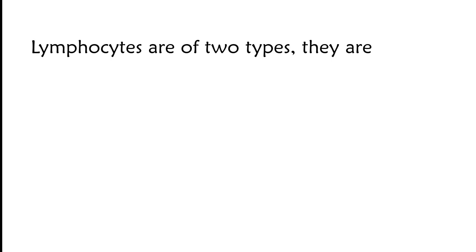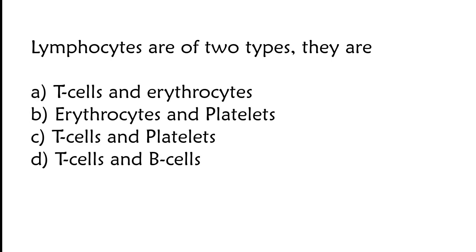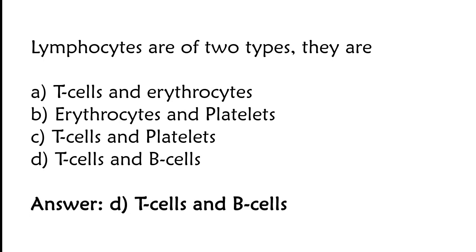Lymphocytes are of two types. Options: T-cells and erythrocytes, erythrocytes and platelets, T-cells and platelets, T-cells and B-cells. The correct answer is option D. Lymphocytes are of two types: T-cells and B-cells.